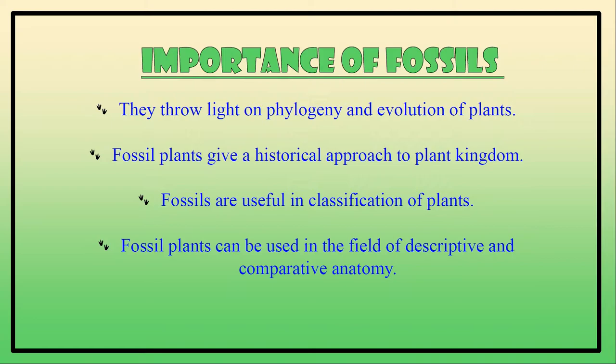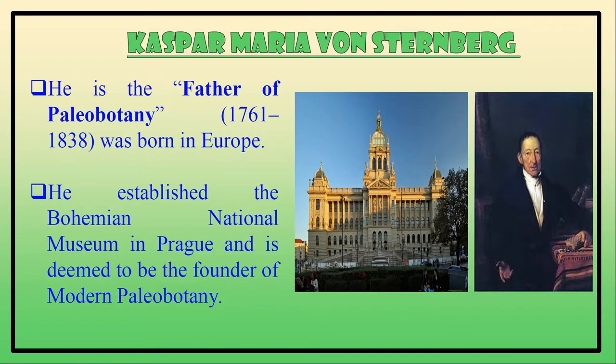The importance of fossils: fossils tell about the phylogeny and evolution of plants. Phylogeny is the history of evolution of a species. Fossil plants give a historical approach to the plant kingdom and are useful in the classification of plants. They can also be used in the field of descriptive and comparative anatomy. Casper Maria von Sternberg is called the father of paleobotany. He was born in Europe, established the Bohemian National Museum in Prague, and is the founder of modern paleobotany.